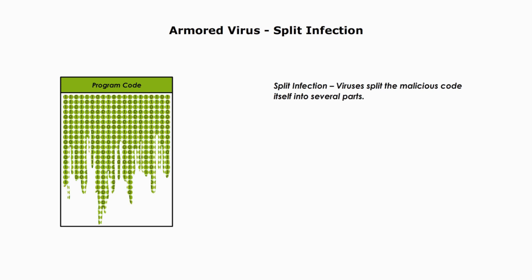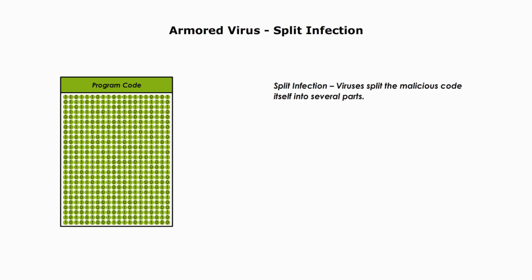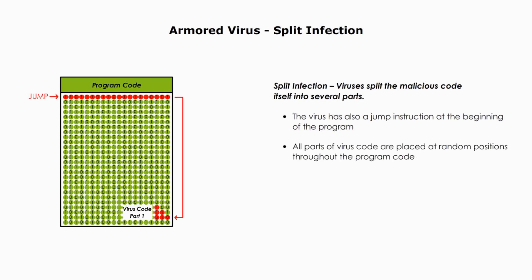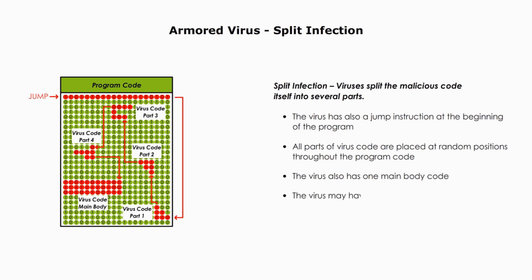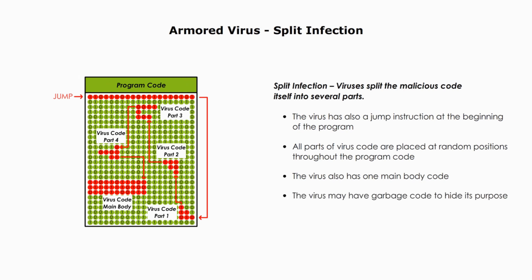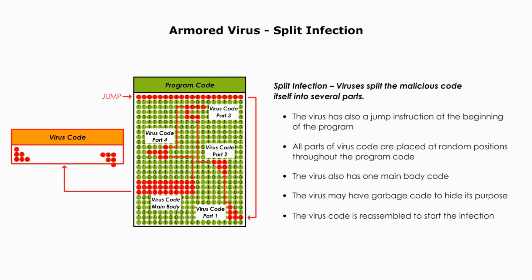Split infection: viruses split the malicious code itself into several parts. The virus also has a jump instruction at the beginning of the program. All parts of the virus code are placed at random positions throughout the program code. The virus also has one main body code. The virus may have garbage code to hide its purpose. The virus code is then reassembled to start the infection.